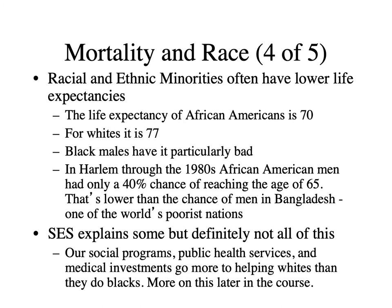Racial and ethnic minorities often have lower life expectancy. The life expectancy for African Americans in the United States is 70, and for whites it's 77 — so whites live about 10% longer on average than blacks. And black males have it particularly bad. In Harlem in the 80s, African American men only had a 40% chance of reaching the age of 65 — lower than the chance of men in Bangladesh, one of the world's poorest nations.